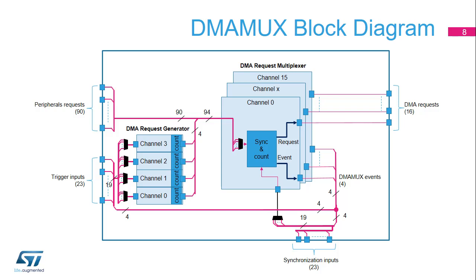The DMA MUX has two main sub-blocks: the request multiplexer and the request generator. The DMA MUX request multiplexer enables routing a DMA request from peripherals to the DMA controllers via a programmable multi-channel DMA request multiplexer. Each channel selects a unique DMA request, unconditionally or synchronously with events from its DMA MUX synchronization inputs. The DMA MUX may also be used as a DMA request generator from programmable events on its input trigger signals. Do not confuse DMA request generator channels 0 to 3 with DMA request multiplexer channels 0 to 15.